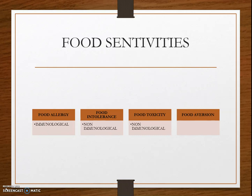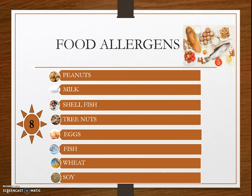Food aversion is a strong dislike of a particular food. Food aversion may be psychological in nature — some persons are psychologically convinced that certain foods disagree with them, but when tested, they fail to react to that food in allergy tests. This is simply because of their psychological belief. Another instance of food aversion is commonly observed during pregnancy.